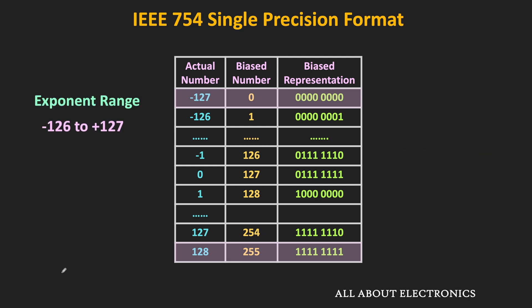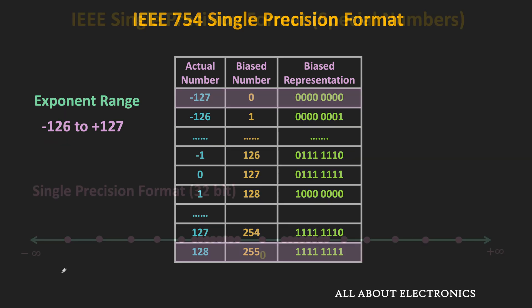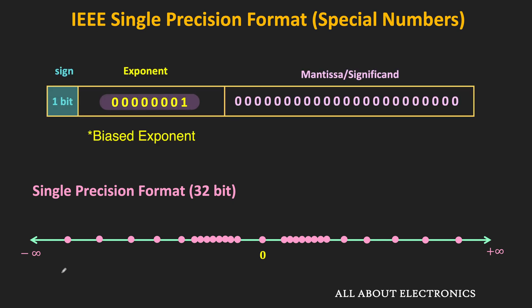In this IEEE format, for any normalized number, the range of the exponent is from minus 126 to plus 127. So the minimum value of the exponent is equal to minus 126, and the corresponding stored exponent value is equal to 1. With this smallest exponent value, if the mantissa field is also 0, then that represents the smallest normalized number, equal to 1.0 times 2 to the power minus 126. Depending on the sign, we have the positive or negative version. So if we want to represent 0 in this normalized form, we cannot represent it.